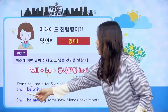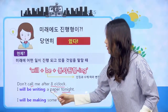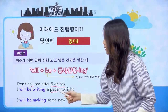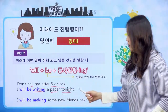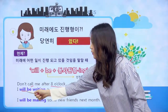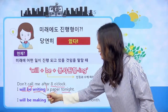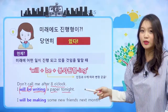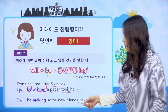'will be 동사 ing' 하면 미래의 진행을 나타내는 문장이 되겠습니다. 이 be 동사는 인칭과 수에 따라 변하지 않아요. 왜? 앞에 있는 will이 조동사니까. 예문 한번 보겠습니다. 'Don't call me after 8 o'clock. I'll be writing a paper tonight.' 나한테 8시 이후에 전화하지 마. 나는 오늘 밤에 논문/숙제를 쓰고 있을 거야. will be, be 동사 안 변했죠. 동사에 ing가 붙었네요.